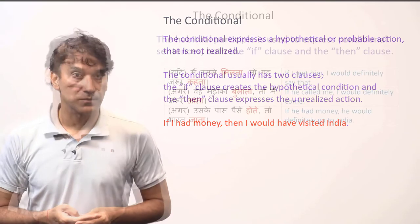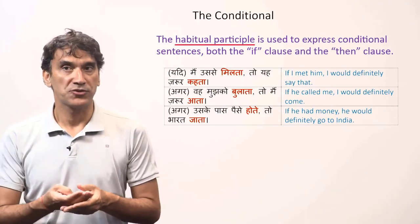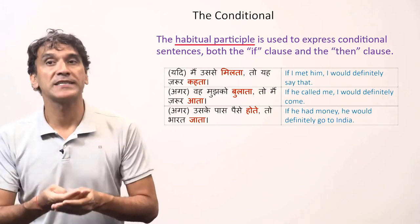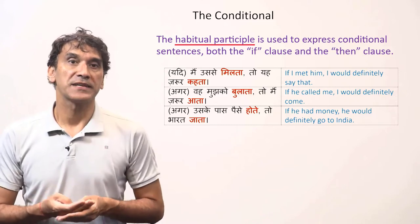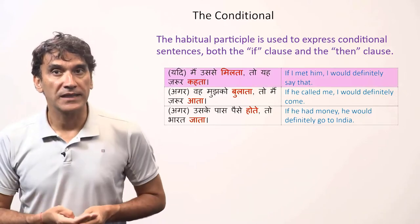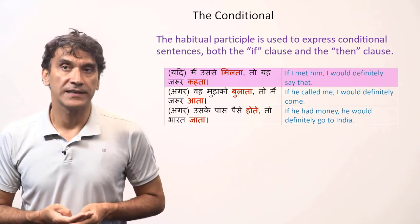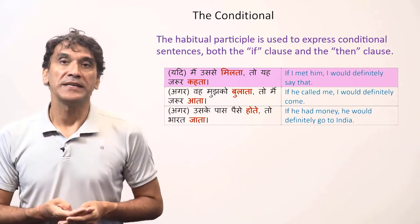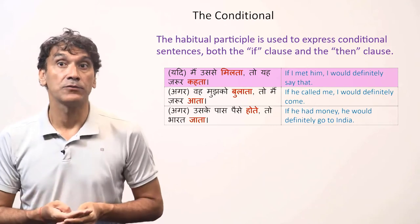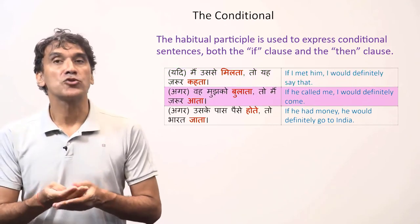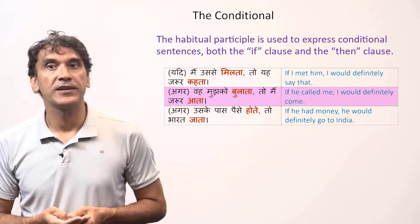In Hindi, conditional sentences are made by the habitual participles — the habitual participle itself is used to express the conditional sentence. Here are some examples: if I met him, I would definitely say that — meaning I did not meet him and I did not tell him. If he had called me, I would have definitely come.